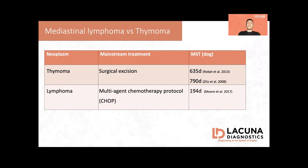The differentiation between mediastinal lymphoma and thymoma is so important because the treatment is different, and the prognosis is different too. Thymomas are usually approached with surgical excision, and based on the literature, the median survival time is over two years — in fact, the majority of cases in these studies died from causes different from thymoma. In the case of lymphoma, the approach is usually a multi-agent chemotherapy protocol, often CHOP, and based on the literature — specifically the paper from Moore from 2017 — the overall survival time was 194 days.